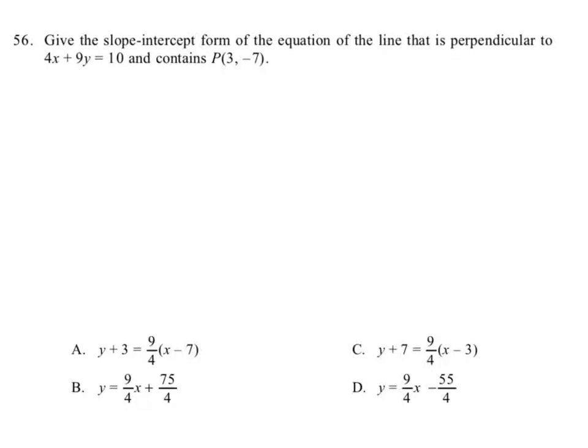It says give the slope-intercept form of the equation of the line that is perpendicular to this given line 4x plus 9y equals 10 and contains point P which is (3, -7).